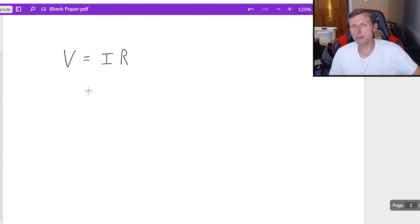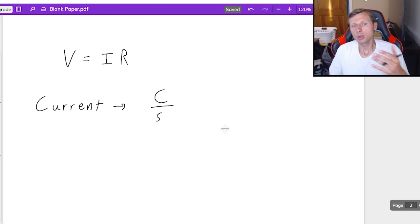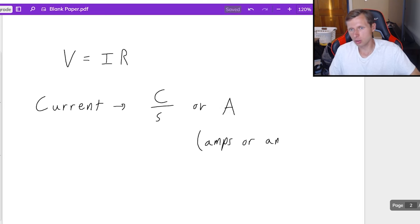So then now we need to talk about that I. And capital I stands for current. And the units for current are going to be the charge per second, C divided by S. However, you will never hear it called the coulomb per second. And that's because we have a better name for it. It is capital A, which stands for amps, or the longer name, amperes. But we can call them amps, and the symbol is capital A. And that's what I want you using for current.